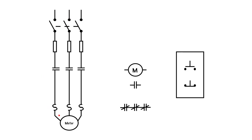Here we have our power circuit — three phase power coming in, our disconnect, and the interlock (that's what the dotted line means), some fuses, our M contacts, motor contacts, and our overloads and heaters, and our three phase motor. On this side we have our control circuit: our push button stations, our M coil, our hold-in contacts, our overload contacts. We're going to use the schematic to physically wire up our control circuit.